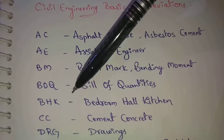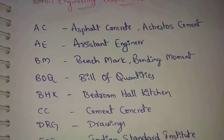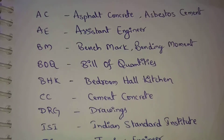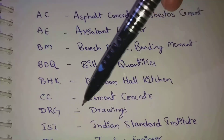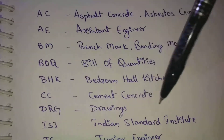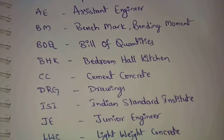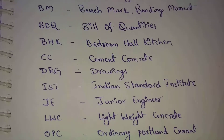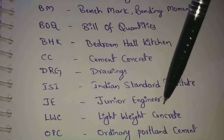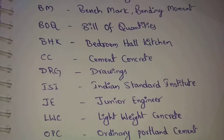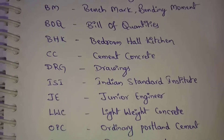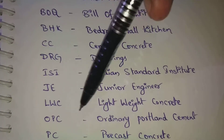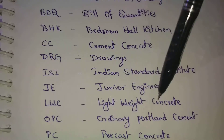Next, CC — CC means cement concrete. Next, DRG — DRG means drawings. Next, ISI — ISI means Indian Standard Institute. Next, JE — JE means junior engineer. Next, LWC — LWC means lightweight concrete. This concrete is prepared with lower weight compared to normal concrete.